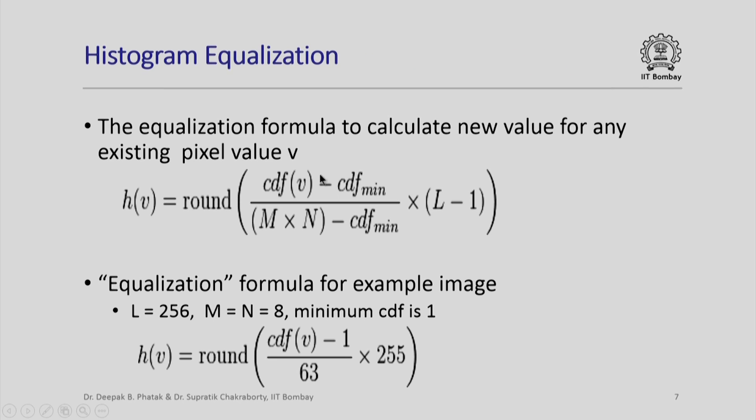Here are the formulae from the Wikipedia article. The equalization formula permits us to calculate a new value for every pixel value v. The formula maps v into h(v) given by rounded value of CDF(v) minus CDF_min divided by (M × N) minus CDF_min, the whole thing multiplied by (L - 1).